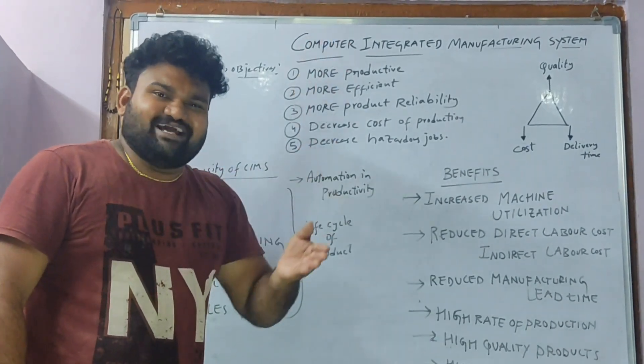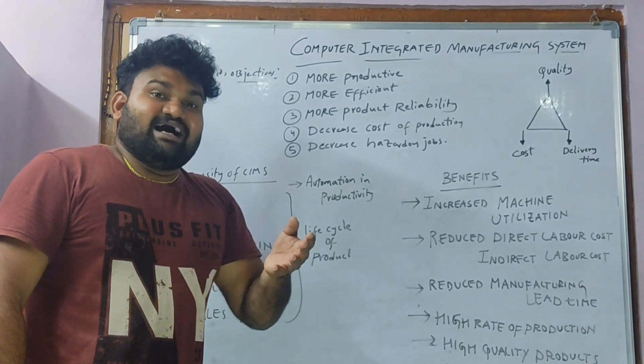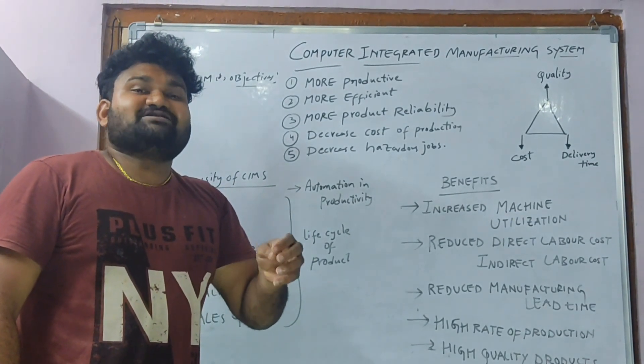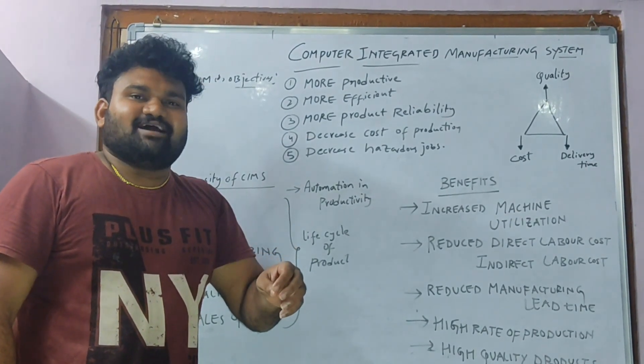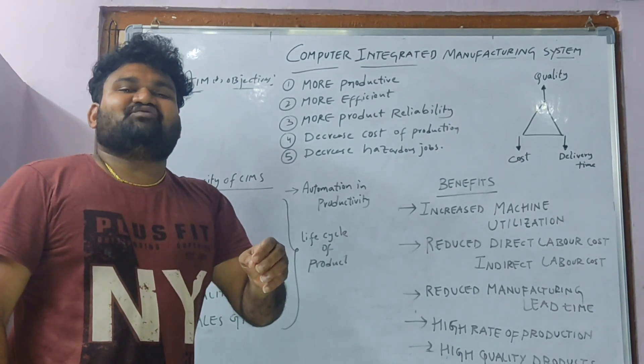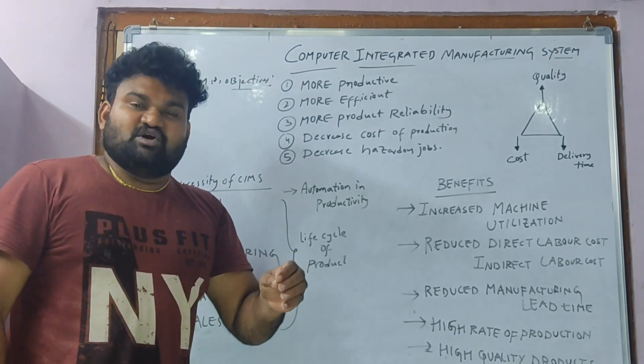This is the cycle of a product. The first cycle is automation. That is the necessity of Computer Integrated Manufacturing System.